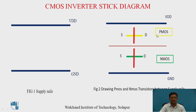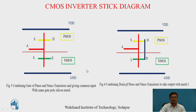Draw the enhancement-type PMOS in the upper part and the NMOS in the bottom part of the demarcation line. This is shown in the second figure. In the third figure, extend the polysilicon so that we can connect and provide the input at the gate terminal.